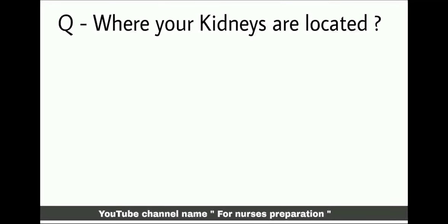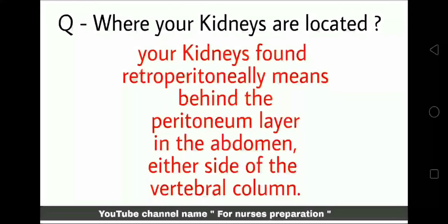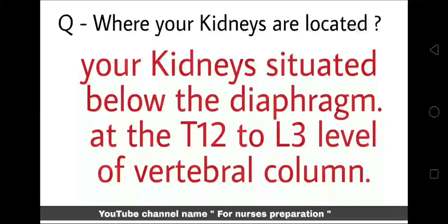Question number 1: Where are your kidneys located? Your kidneys are found retroperitoneally — meaning behind the peritoneum layer in the abdomen — on either side of the vertebral column. Your kidneys are situated below the diaphragm at the T12 to L3 level of the vertebral column.